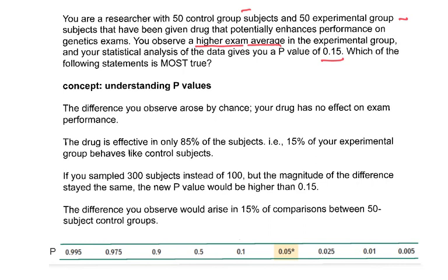So even if you hadn't treated one of the experimental groups, and you were actually looking at two control groups, they aren't always going to have the exact same exam average. There's always going to be some variation. And statistics tells us about that variation. And so what the real answer is is this one at the bottom. It says the difference that you observe would arise in 15% of cases when you're just comparing groups that don't differ in any real way. If you just had two control groups of 50 people in 15% of the cases, you would see at least as large a difference as the one that you observed.